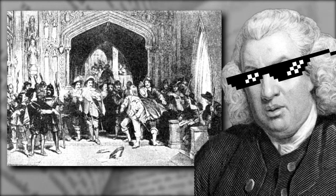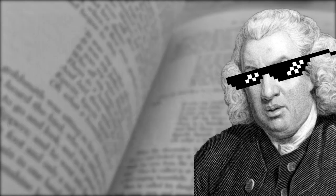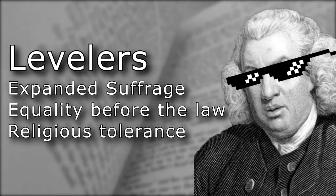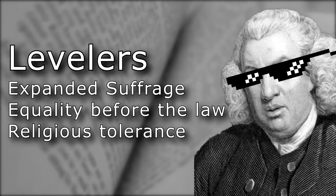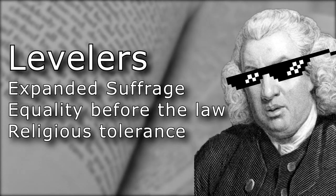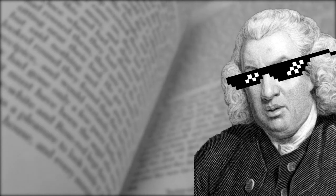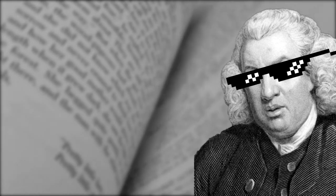The Grandees were nobles that stood in opposition to another group called the Levelers. They stood against the Levelers because they desired expanded suffrage, equality before the law, and religious tolerance. This event was called Pride's Purge, and it was the first time the word purge was used to describe the removal of people who are politically undesirable. Since then, it's been used to describe similar methods used by totalitarian and communist regimes around the world.